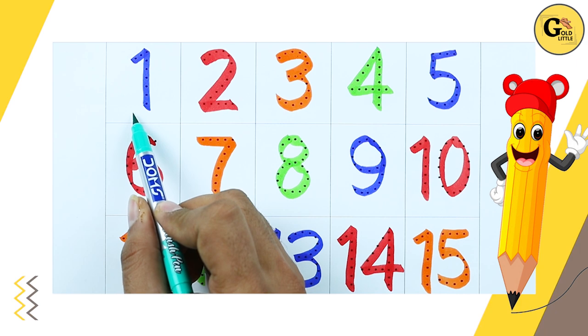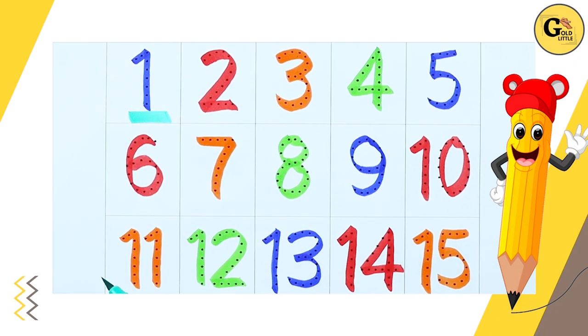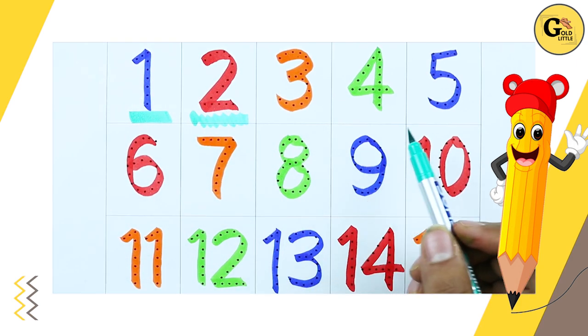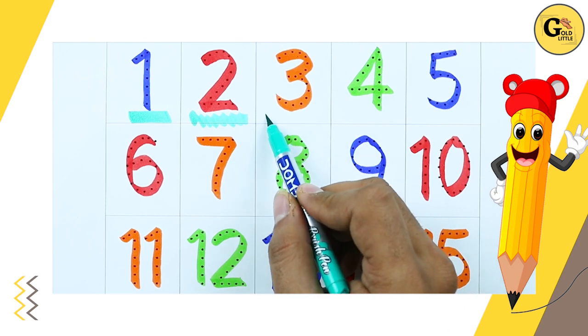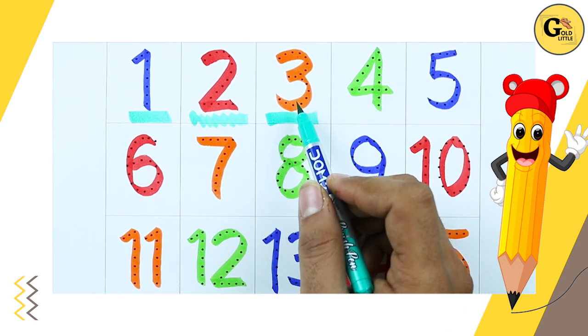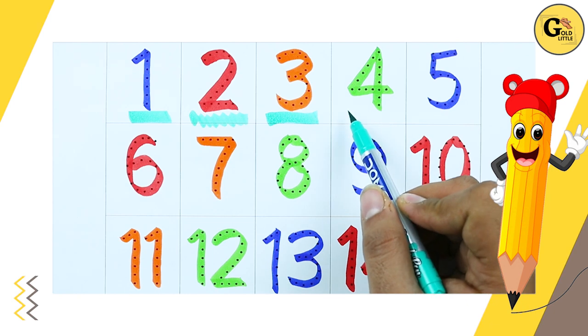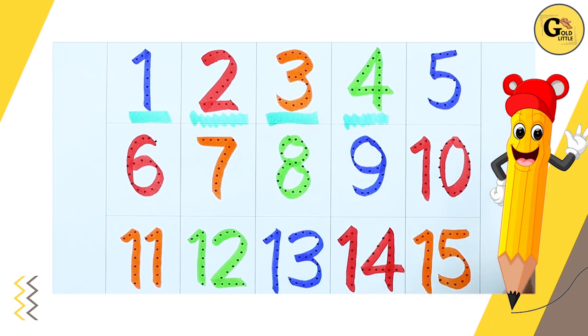It's number 1 with blue color. Number 2 with red color. Number 3 with orange color. Number 4 with green color.